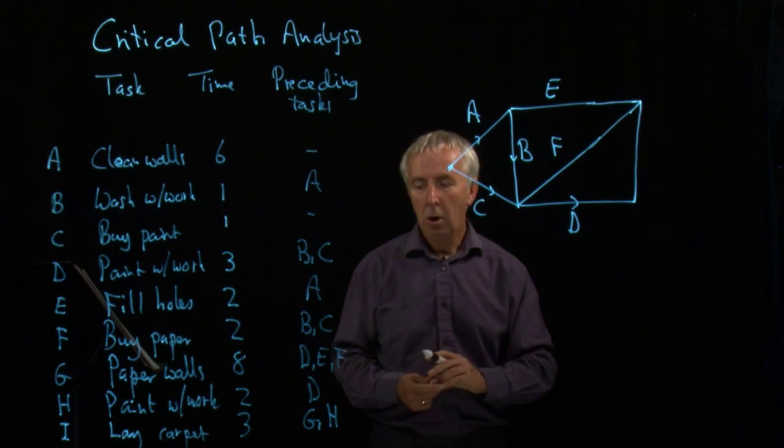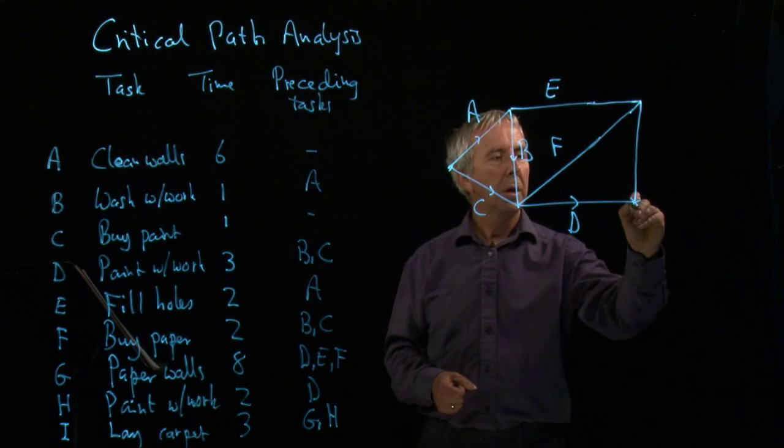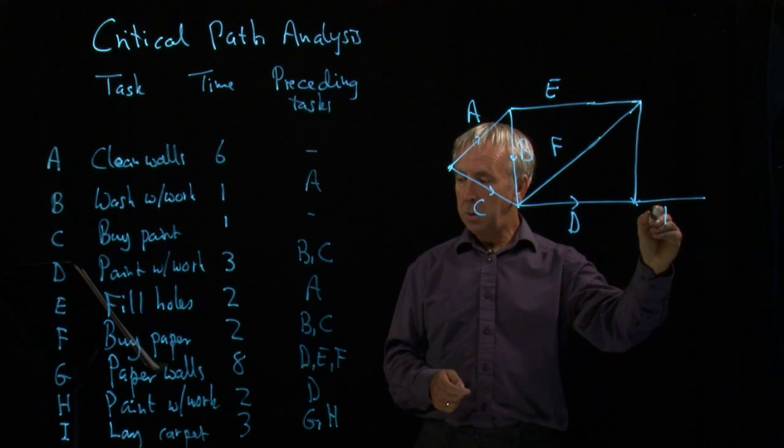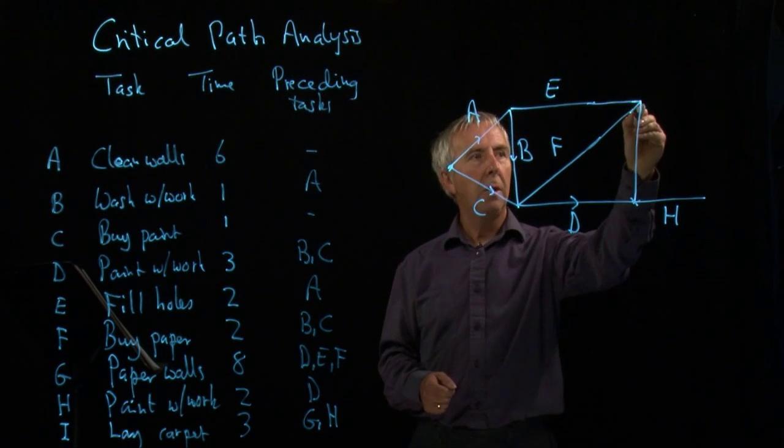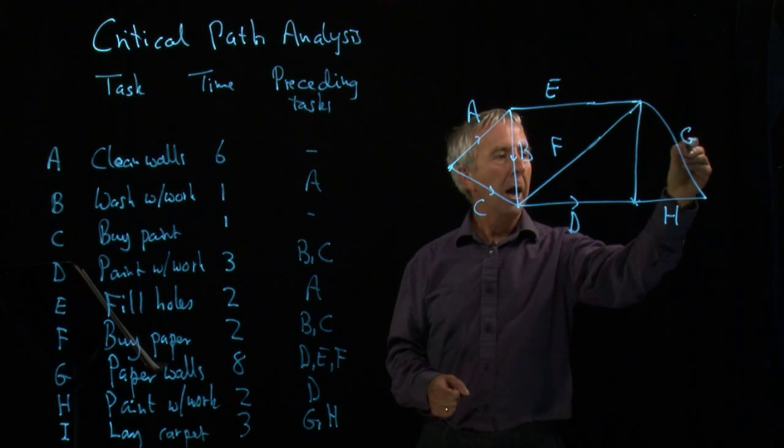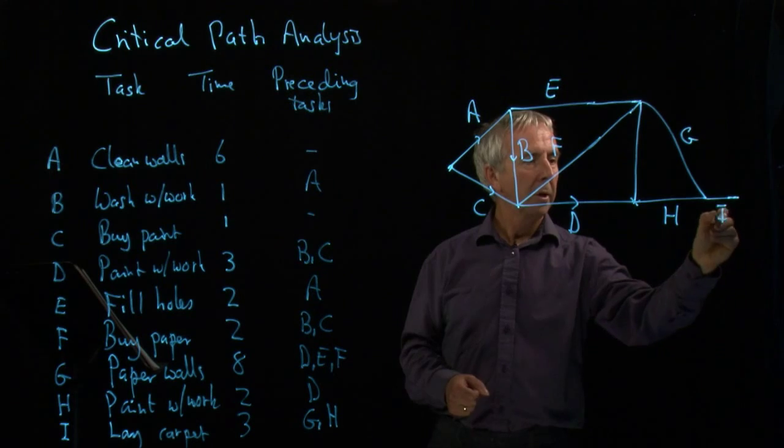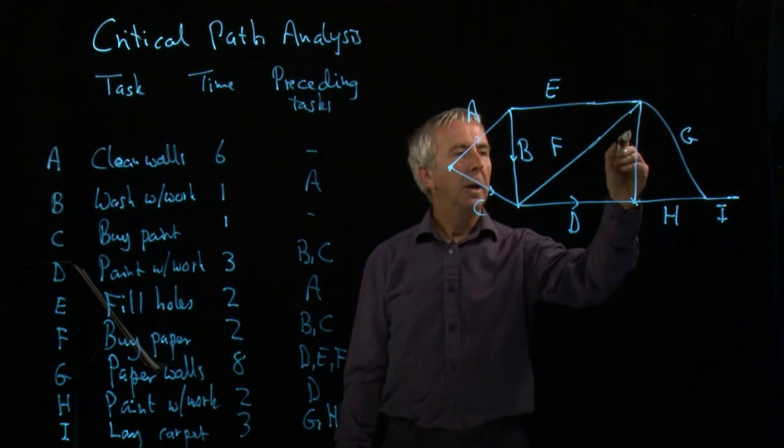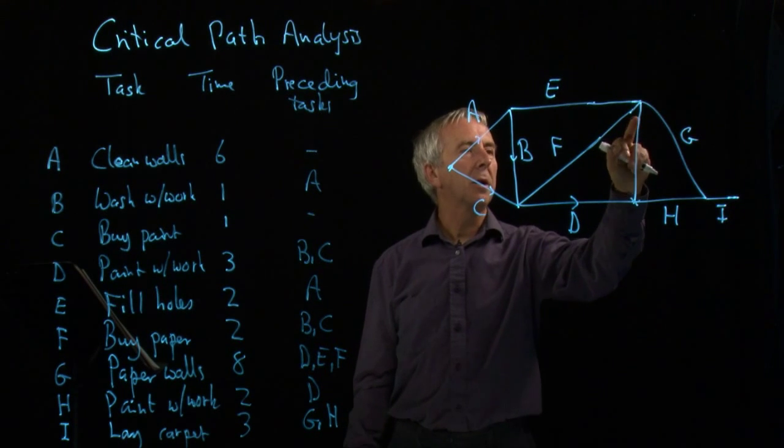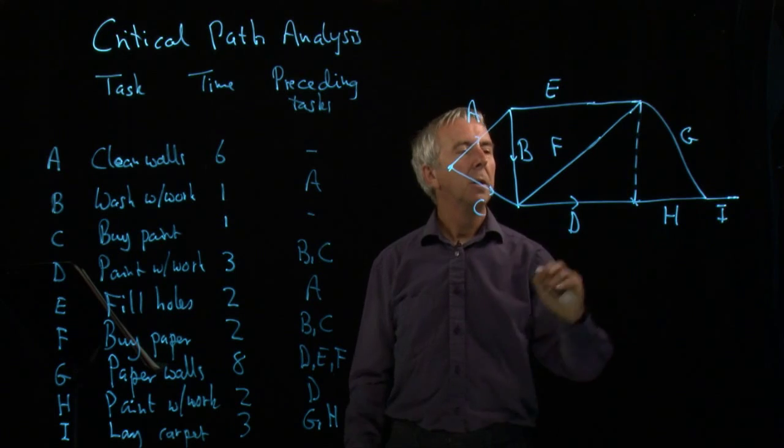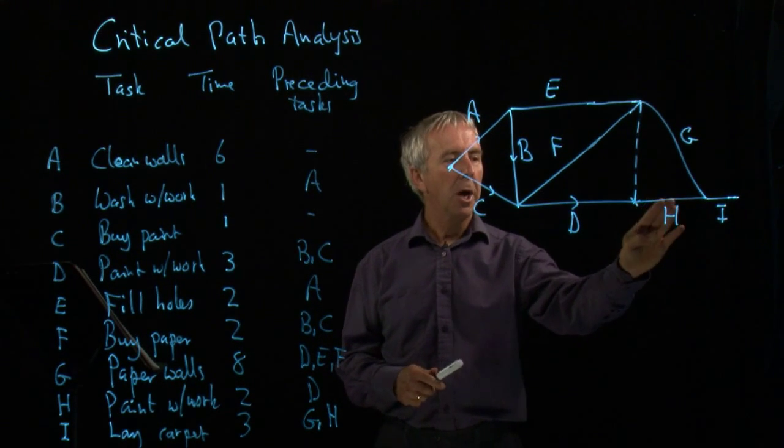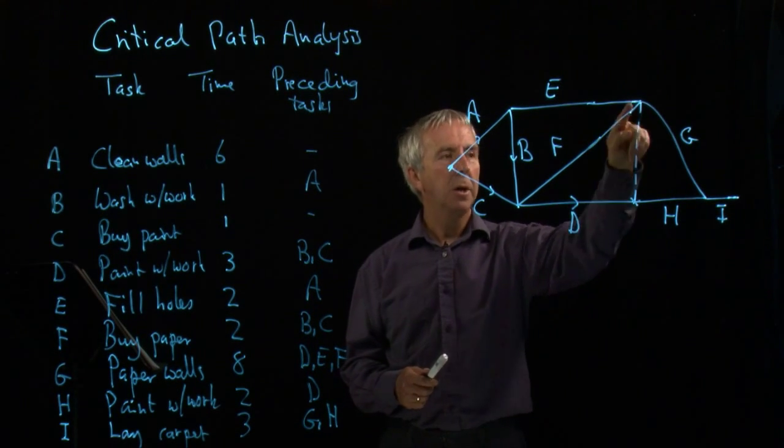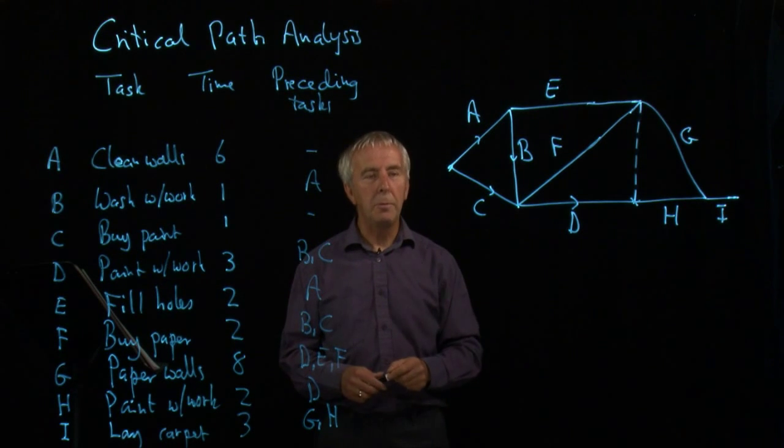H depends simply on D. So we need to be a bit careful here. And the way that we do this is by using what's called a dummy variable, a dummy activity, which I'll explain in a minute. So H comes after D, G comes after D, E and F. And then I comes last. The actual length of the lines don't mean anything. It's just a network to show the connections. As I say, this is a dummy activity. Sometimes we do it with dotted lines. It doesn't take any time, but it shows that H follows simply after D, whereas G depends on E, F and D all happening. And then we can put the times in for the various activities.